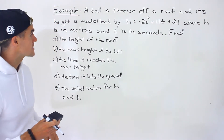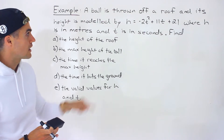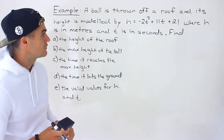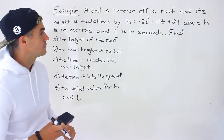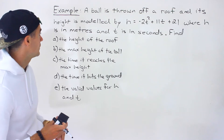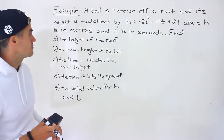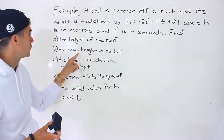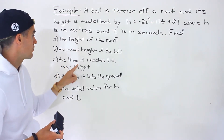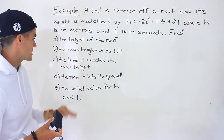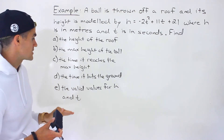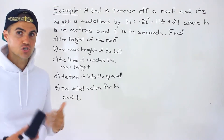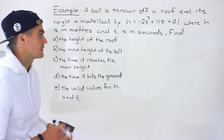A ball is thrown off a roof and its height is modeled by h equals negative 2t squared plus 11t plus 21, where h is in meters and t is in seconds. We have to find the height of the roof, the max height of the ball, the time it reaches the max height, the time it hits the ground, and the valid values for h and t.